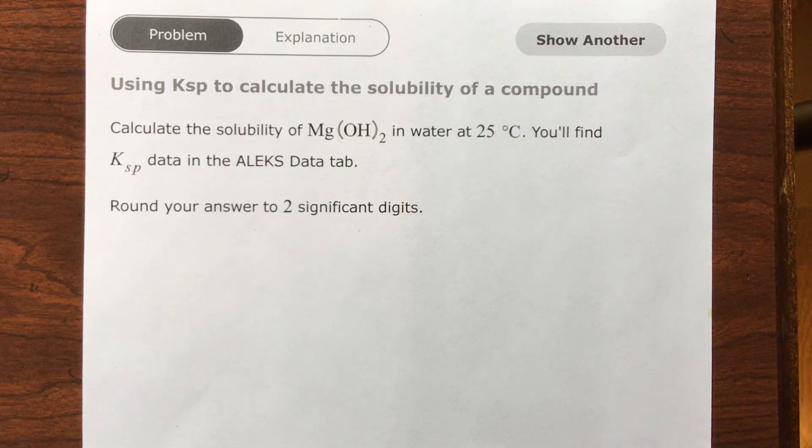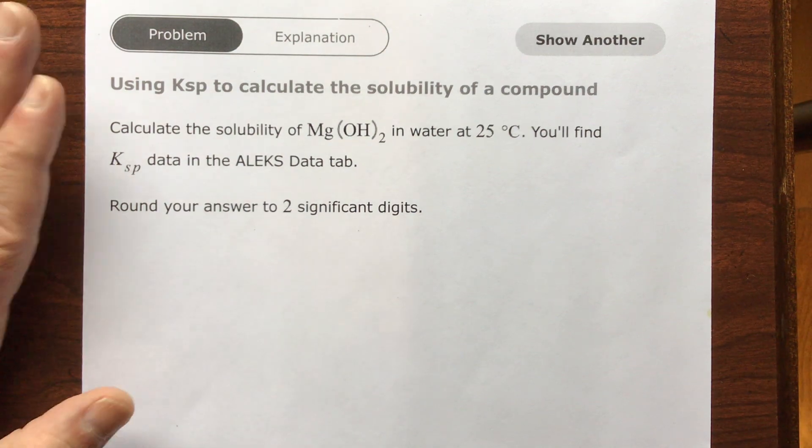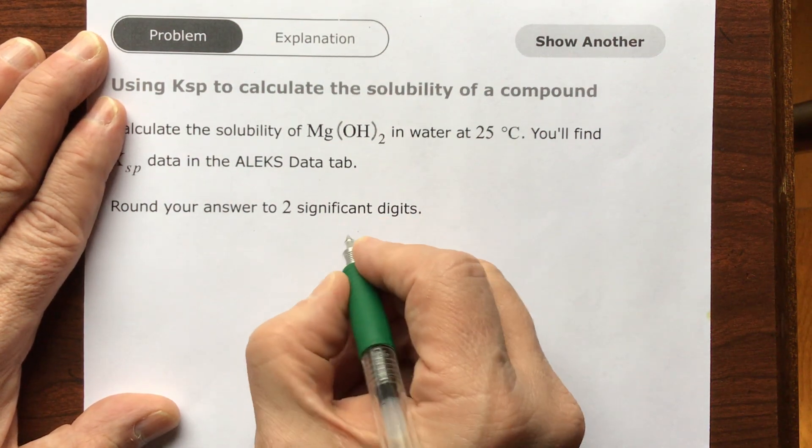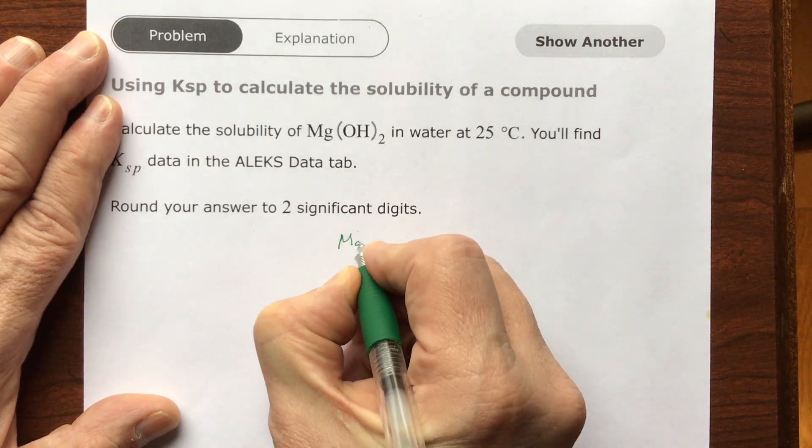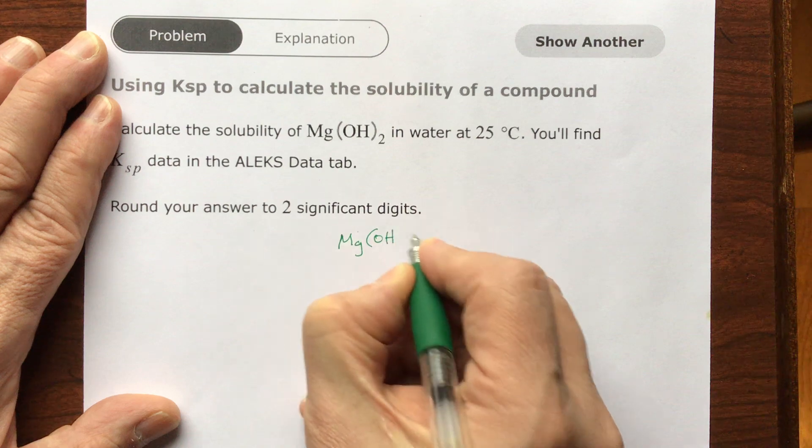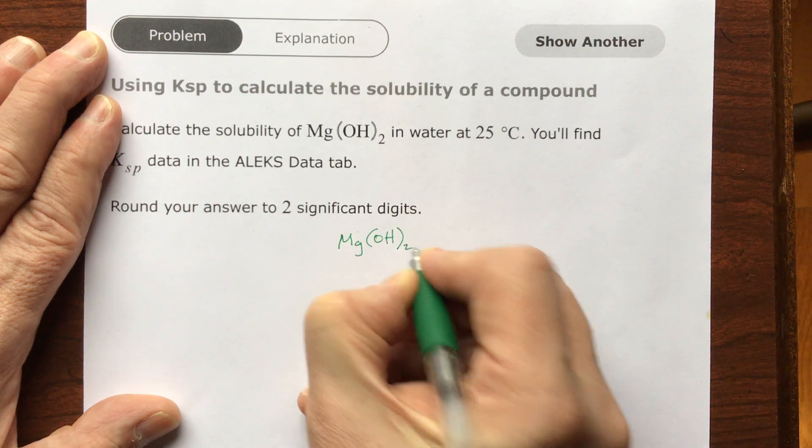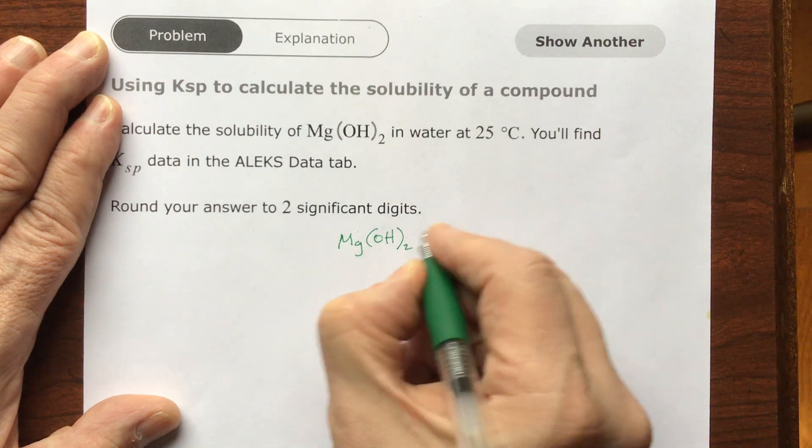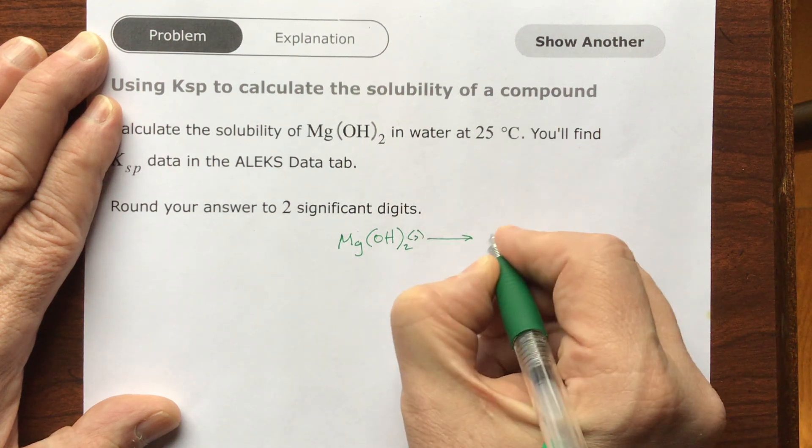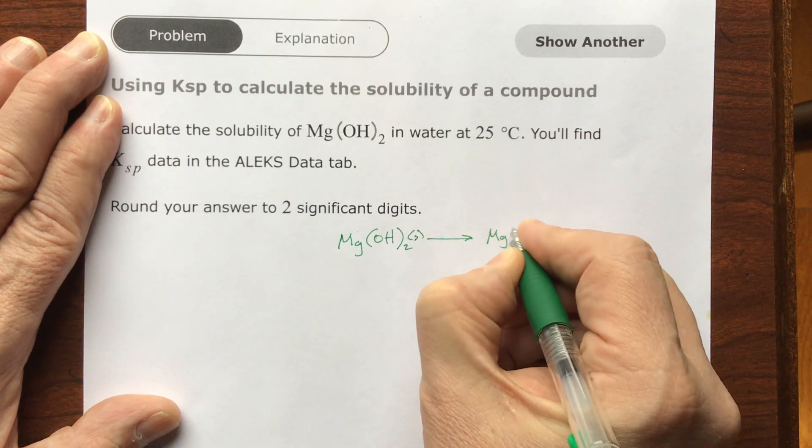So at that point, they're asking you how much is actually dissolving in the water. So first of all, I'm going to write just a quick balanced equation where I'm going to start with magnesium hydroxide, and it's going to break apart into its ions. So first of all, that's a solid.